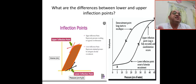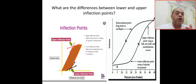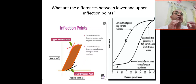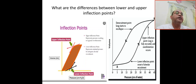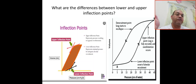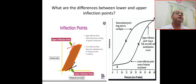What is the benefit of knowing the lower and upper inflection points? It helps you set the PEEP for lung recruitment. Setting PEEP at the level of the lower inflection point is recommended to optimize alveolar recruitment and to prevent repeated opening and closing of the alveoli.